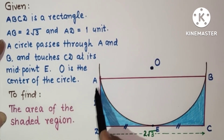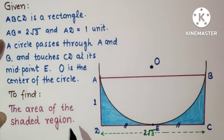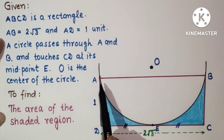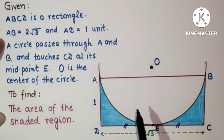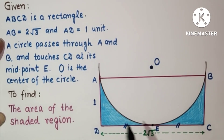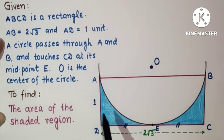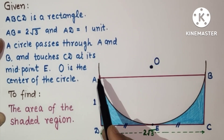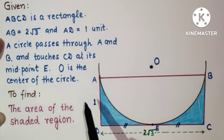To get the area of the shaded portion, we need the area of rectangle ABCD and the area of the segment. The required shaded portion's area will be the area of the rectangle minus the area of this segment. The main problem is how to find the area of this segment.